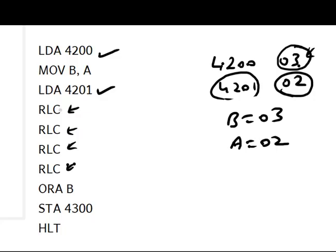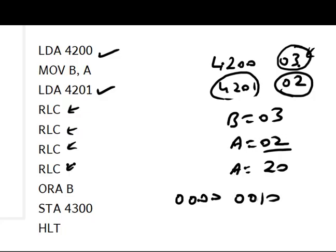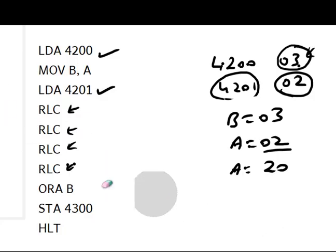RLC stands for Rotate Accumulator Left. With each RLC instruction, the contents of register A are shifted one bit to the left. We perform this four times, so 02 (which is 00000010 in binary) after four left rotations becomes 20 (00100000). We can verify: the lower four bits shift to the upper nibble, giving us 20.